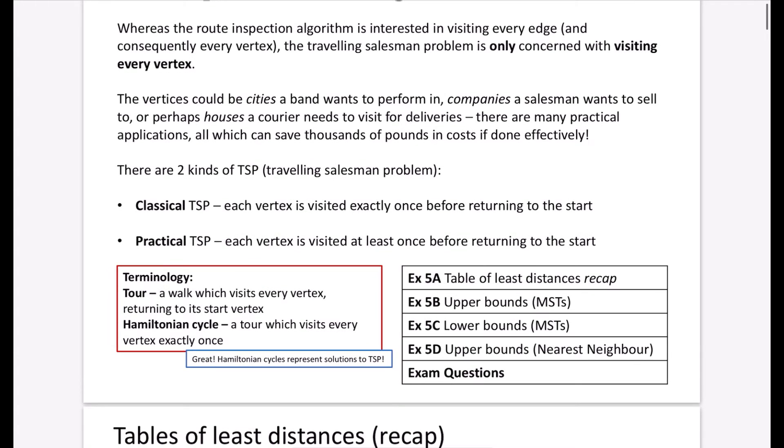And there's a bit of terminology here. A tour is a walk which visits every vertex returning to its start vertex. And a Hamiltonian cycle, which we've already come across before in chapter two, is a tour which visits every vertex exactly once. So Hamiltonian cycles represent solutions to the traveling salesman problem because they are a tour which visits every vertex exactly once. And we know a Hamiltonian cycle returns to the start vertex.